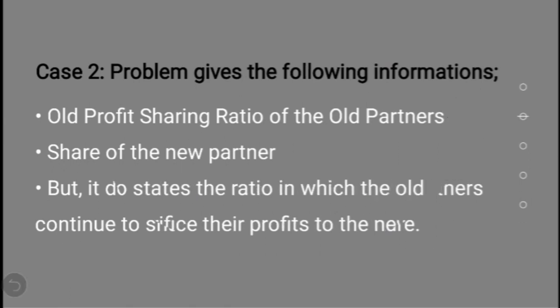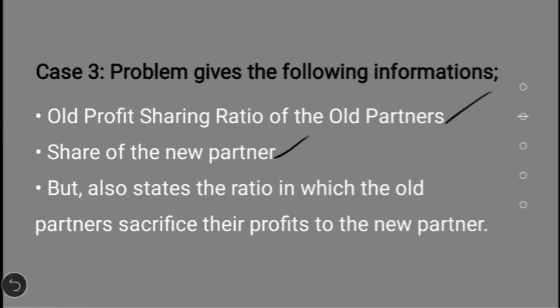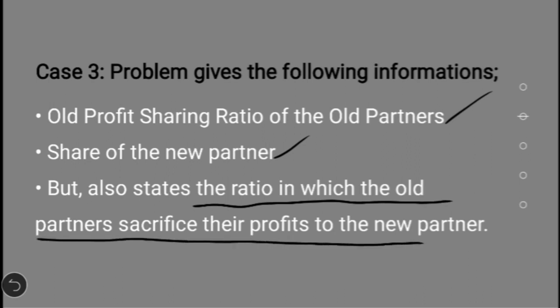In Case 3 the problem gives three informations: the old profit sharing ratio of the old partners, the share of the new partner, and the ratio in which the old partners sacrifice their profits to the new partner — that is, the sacrifice ratio is given. Using these three informations, we calculate the new profit sharing ratio as per Case 3.